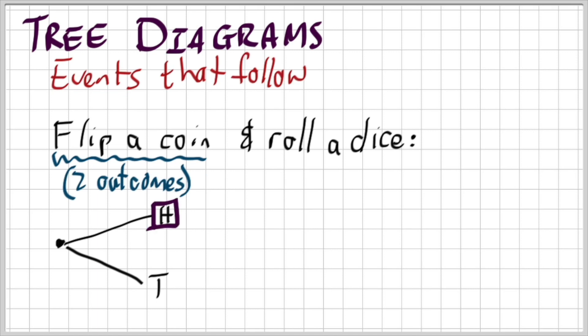If it lands on a head. So in other words I flip the coin and now my outcome is a head which means I'm going to walk along that line. How many options are there if I now go and roll the dice? Well there are six outcomes. So in other words I could either have a one, a two, a three, a four, a five or a six.